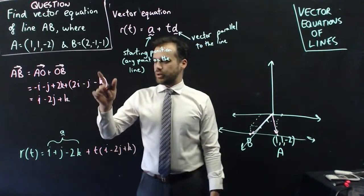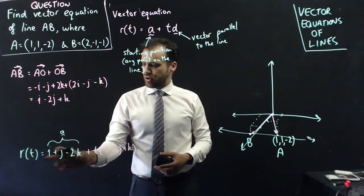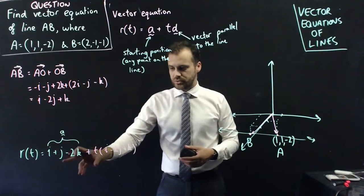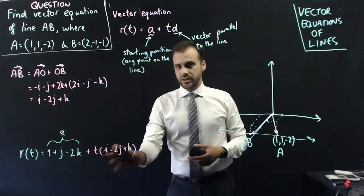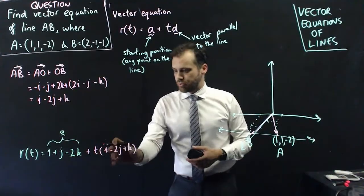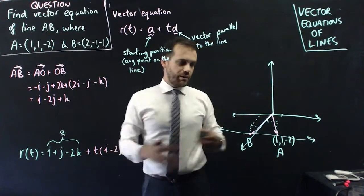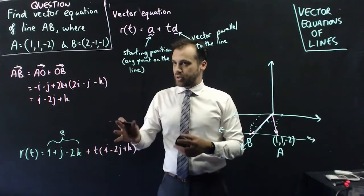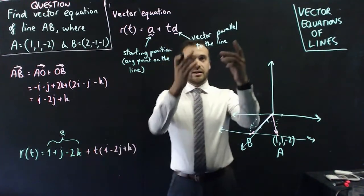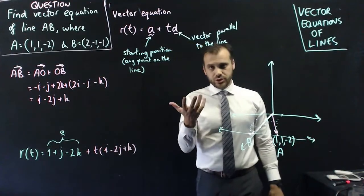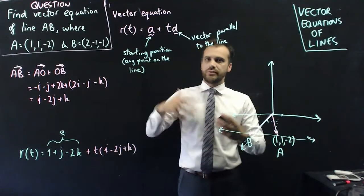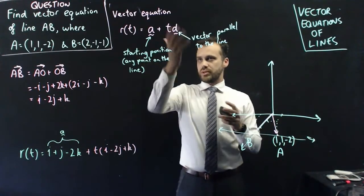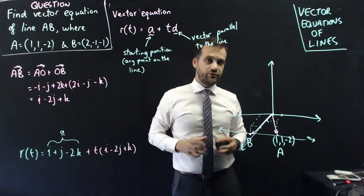We could have written this vector equation in a number of ways — using B instead of A as our starting position, or using vector BA instead of AB as our direction. As long as you have a starting position (any point on the line) and a vector parallel to the line, you're good. These questions can be asked in any number of ways; you may be given some information and not others. As long as you remember these relationships and substitute what you know, it's smooth sailing.